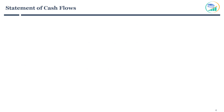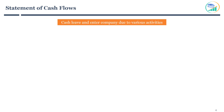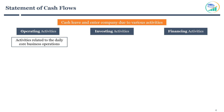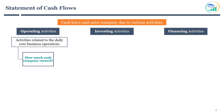Before getting into details of statement of cash flows, it's important to understand the different ways cash enters and leaves a company. Cash leaves and enters the company due to various activities, broadly classified as operating activities, investing activities, and financing activities. Operating activities refer to the activities related to daily core business operations — how much cash the company earned from sale of products or providing services.